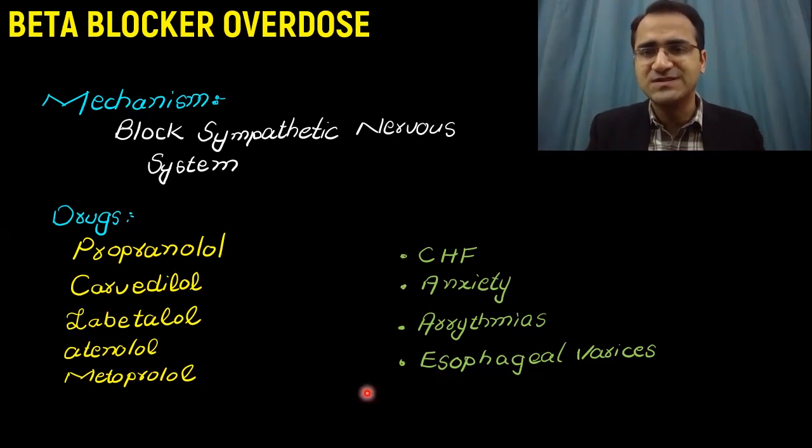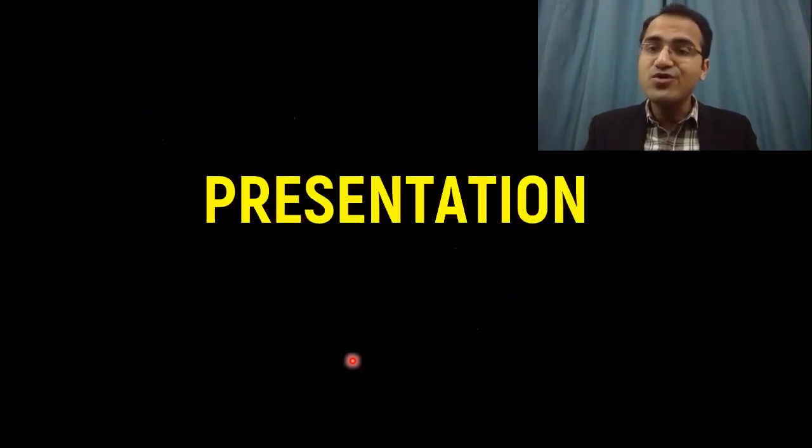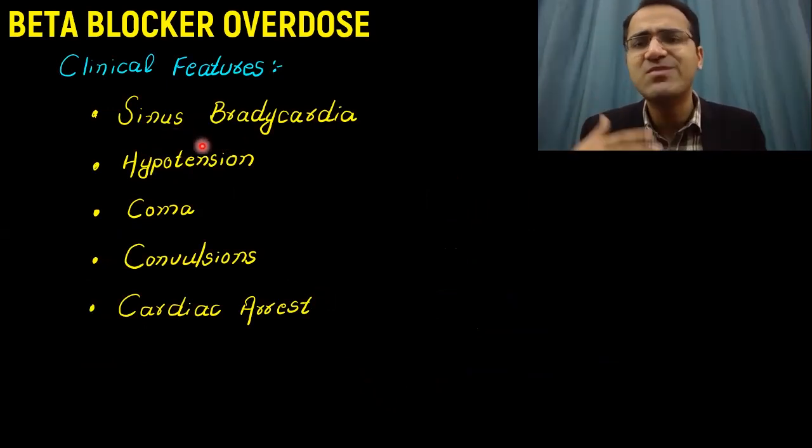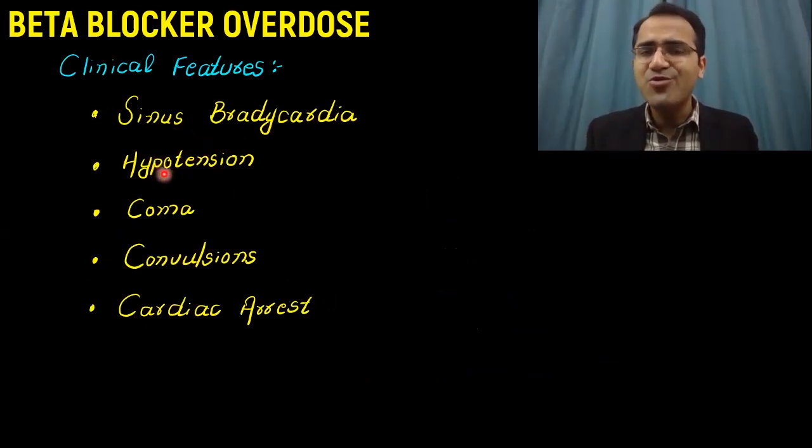These are very commonly used drugs and their overdose presents by the same mechanism by blocking the sympathetic nervous system. If you block the sympathetic nervous system in the heart, it will result in bradycardia, hypotension with vasodilation of the vessels, coma due to slowing down of activity, convulsions, and cardiac arrest.